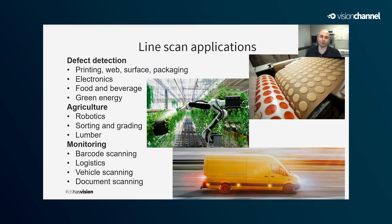Now it's your turn to take this knowledge and apply it to real-world applications. There are many applications for line scan imaging. Defect detection is an important one — it's useful whether you're inspecting large continuous materials such as textiles or need high-resolution images of small electronics. You can also apply this to capturing images of entire wind turbine blades or solar panels. Agriculture is another use case: you can scan entire rows of crops for robotic manipulation, sort and grade products, or scan lumber for knots. For monitoring, you can scan every barcode passing through a conveyor belt in a logistics operation, scan vehicles since their motion provides the translational scanning motion, and of course document scanning is a classic application.